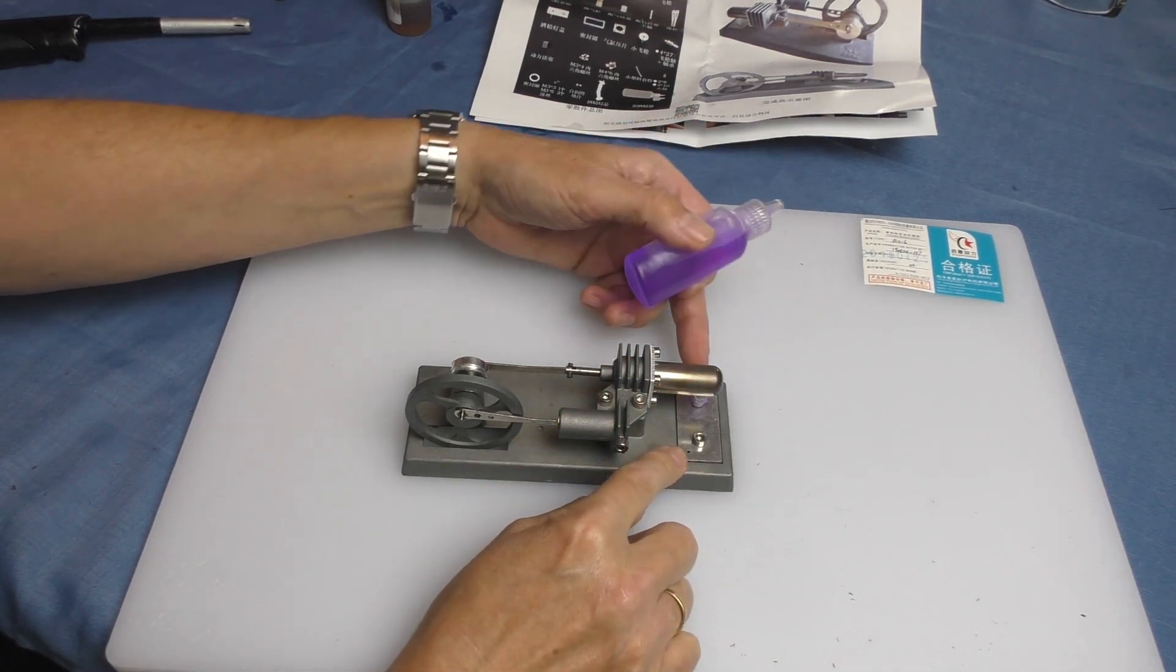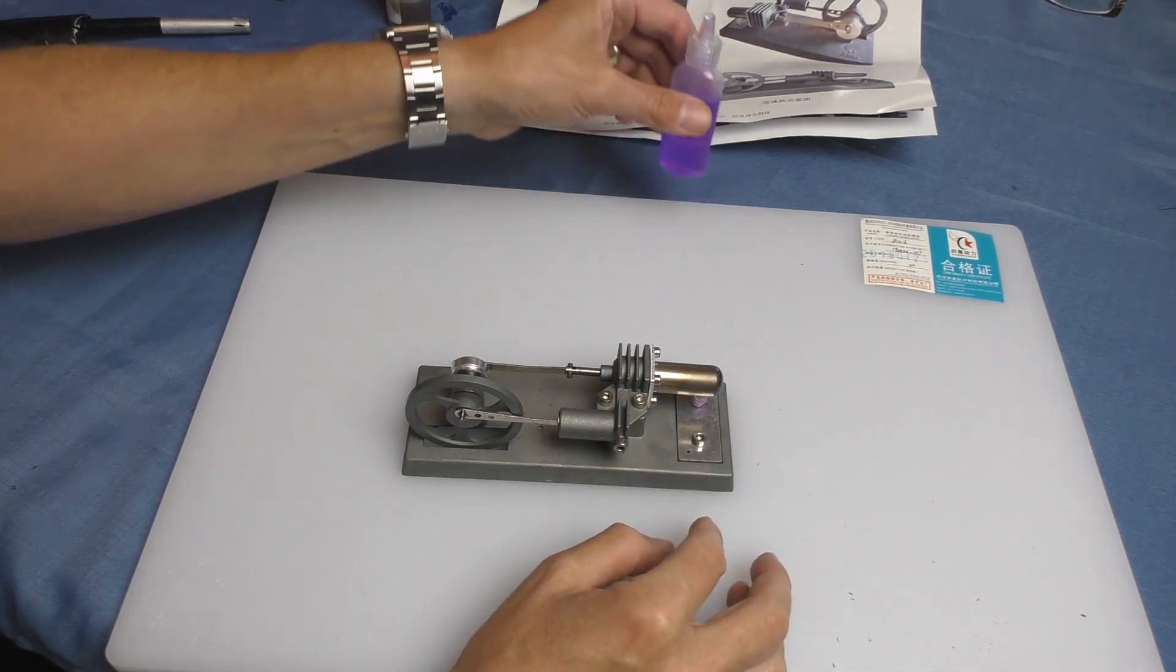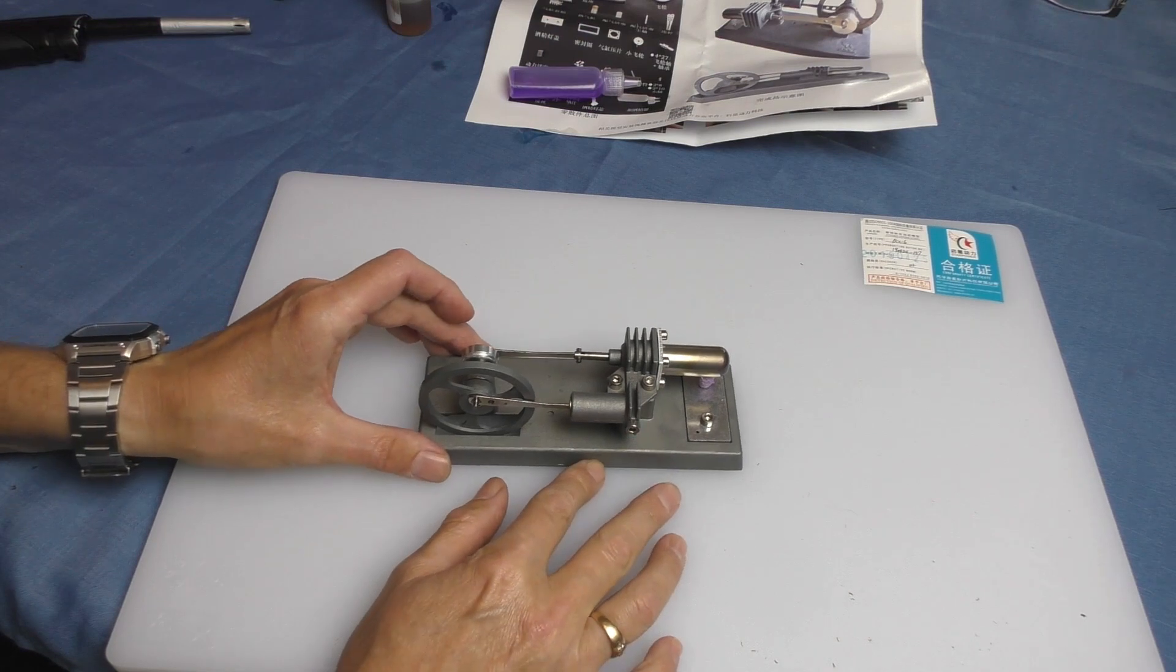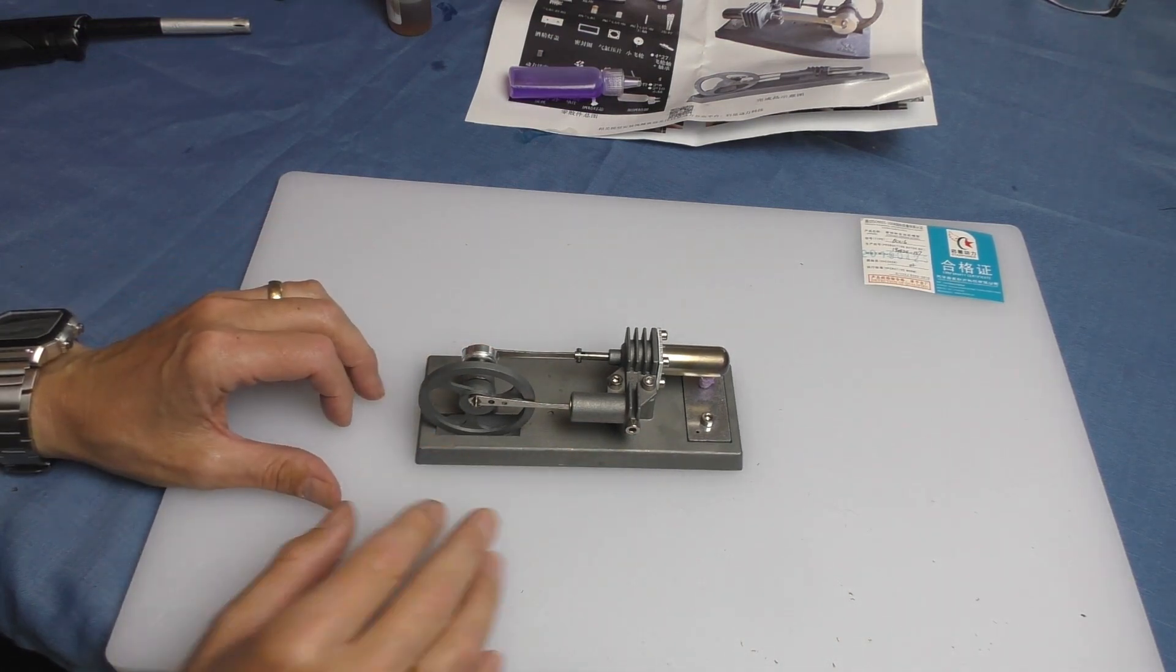But on this video we're going to run it. We're running it on just methylated spirits. It has its own little reservoir there with a little wick. So all made out of metal as well with little rubber seals. That's quite impressive. So yeah, we're going to run it on methylated spirits and I'm going to show you how it runs, and it really is really, really smooth.